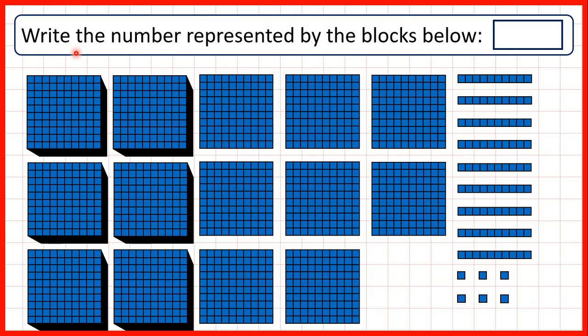We need to write the number represented by the blocks below. So we can see that here we have ones, tens, hundreds, and we also now have these blocks here, which are thousands.